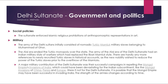Social Policies: The Sultanate enforced Islamic religious prohibitions of anthropomorphic representation in art. Military: The army of the Delhi Sultanate initially consisted of nomadic Turkic Mamluk military slaves belonging to Muhammad of Ghur. The Khalji era ended the Turkic monopoly over the state; the army of the Khalji era had an Indian military style of warfare which replaced the Elbari Mamluk style. A major military contribution of the Delhi Sultanate was the successful repelling of Mongol Empire invasions of India, which could have been devastating for the Indian subcontinent as Mongol invasions had been for China, Persia, and Europe.